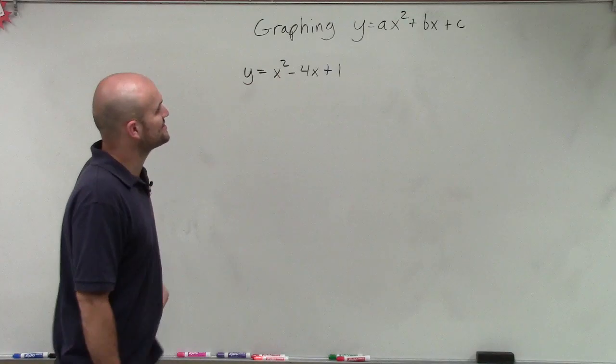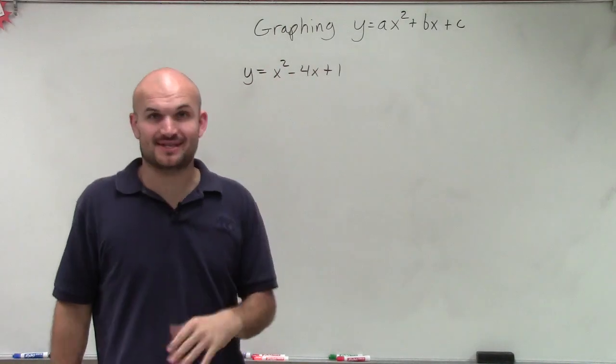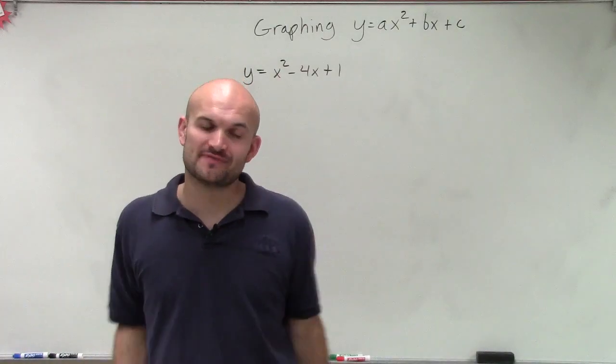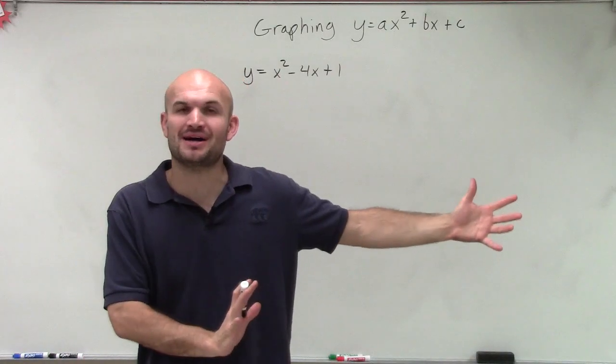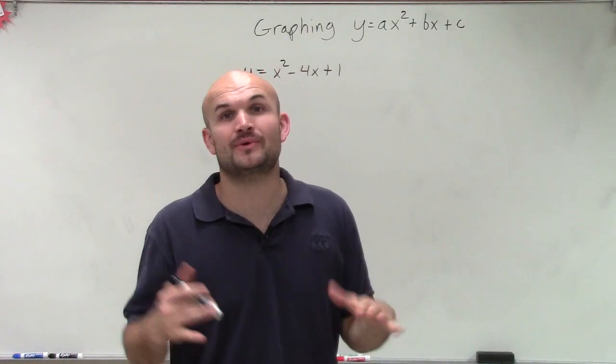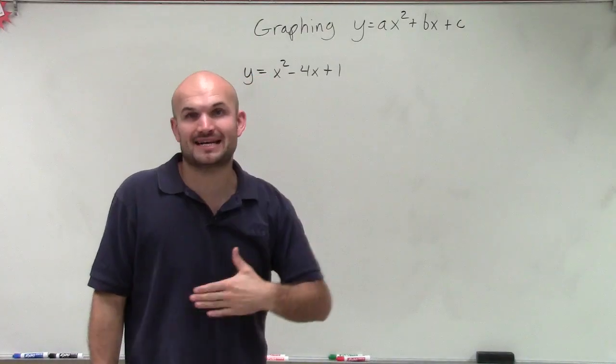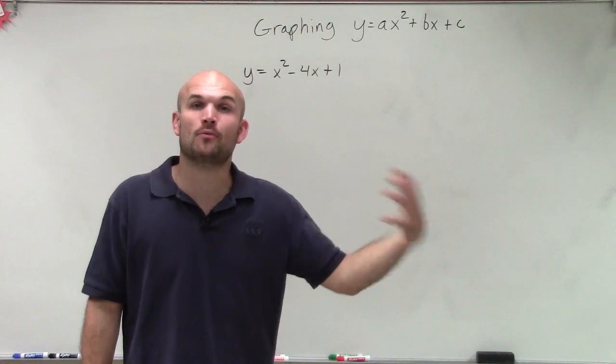Welcome. So now we're going to get into graphing an equation where we have y equals ax squared plus bx plus c. This is the first video. In previous videos, we've been talking about graphing and picking points to the left and right of the axis of symmetry. You've noticed the points to the left and right of the axis of symmetry are exactly the same for the y-coordinate.